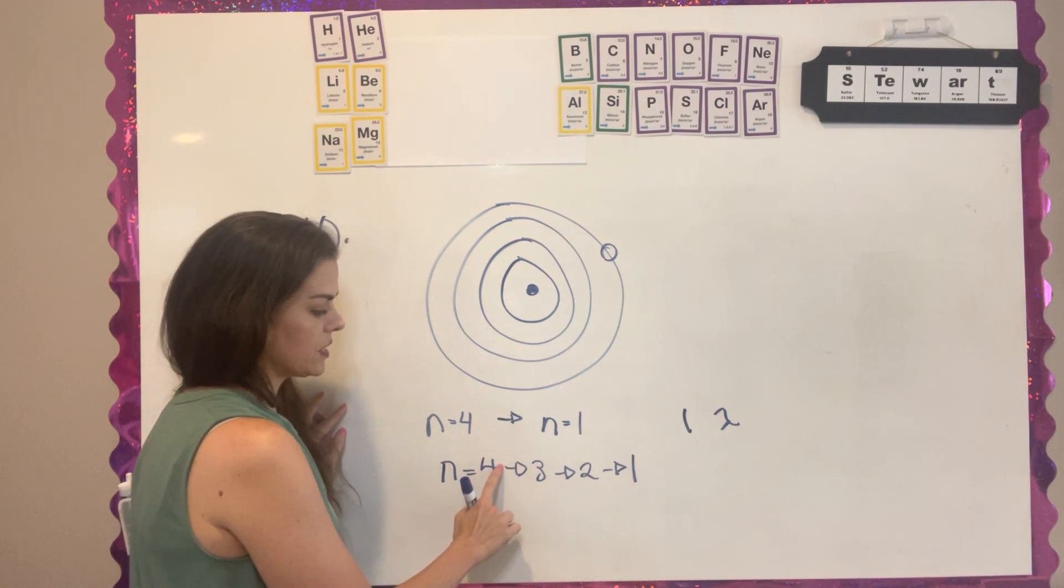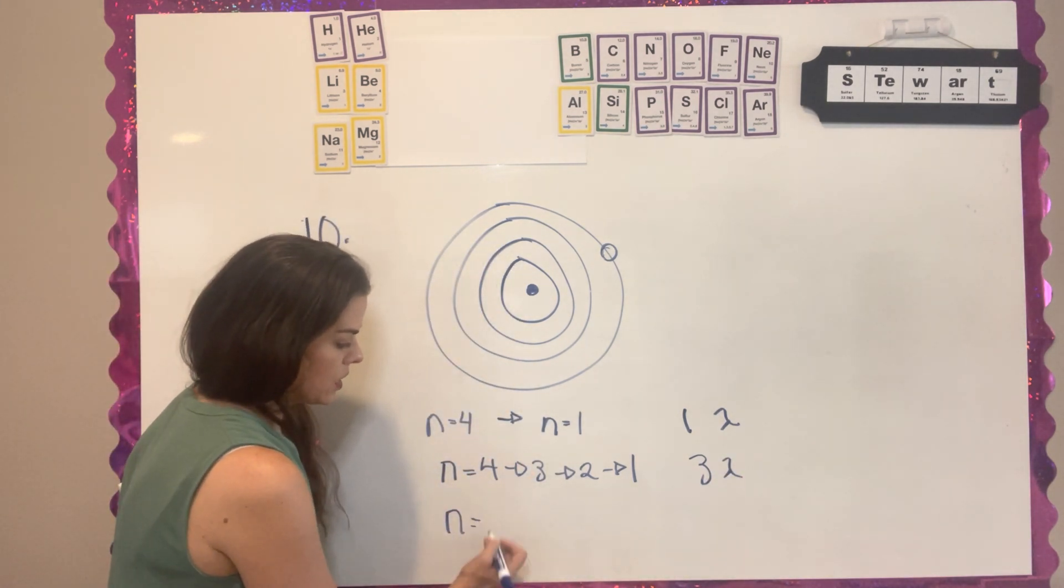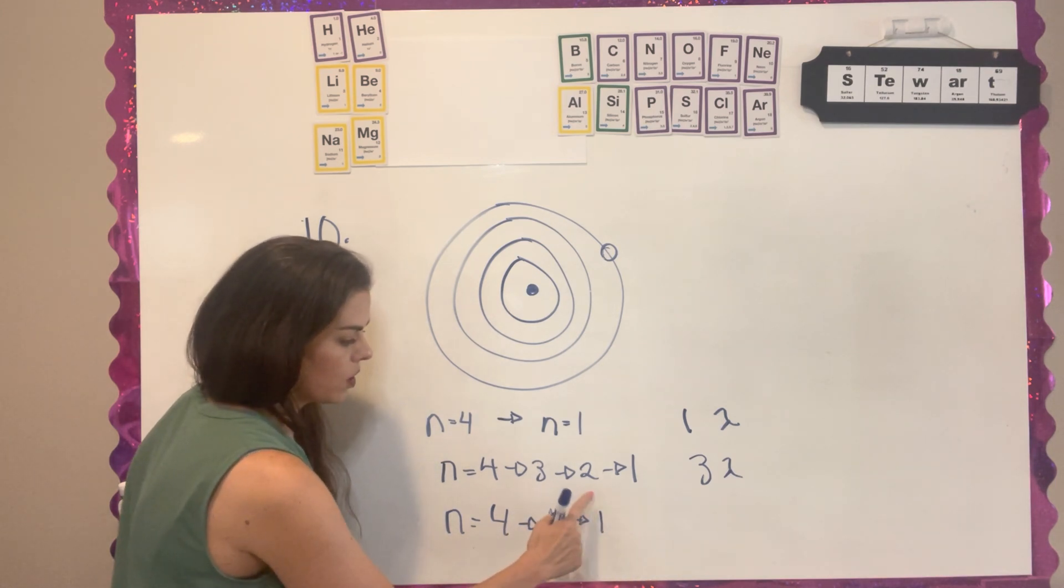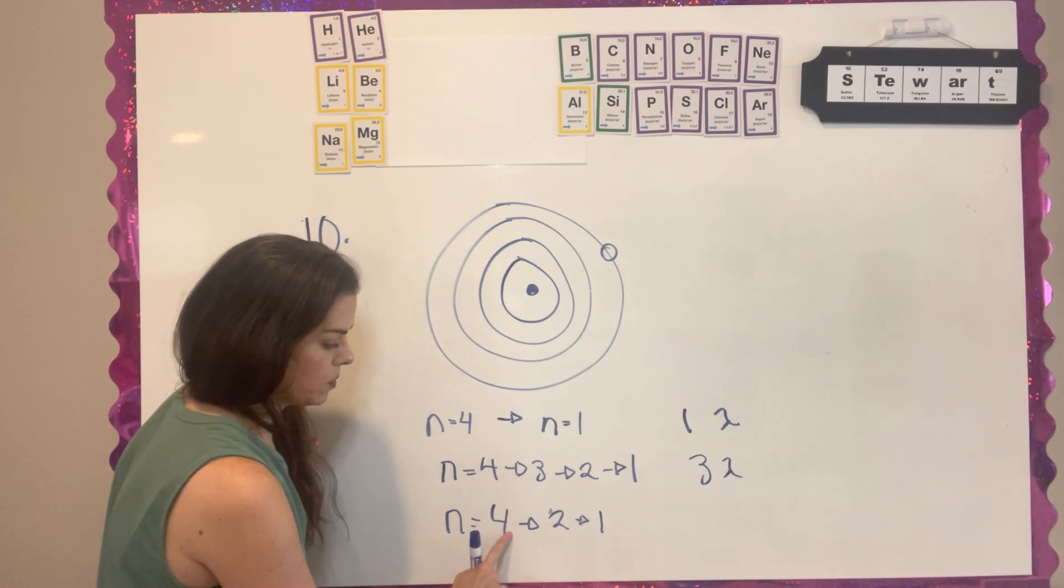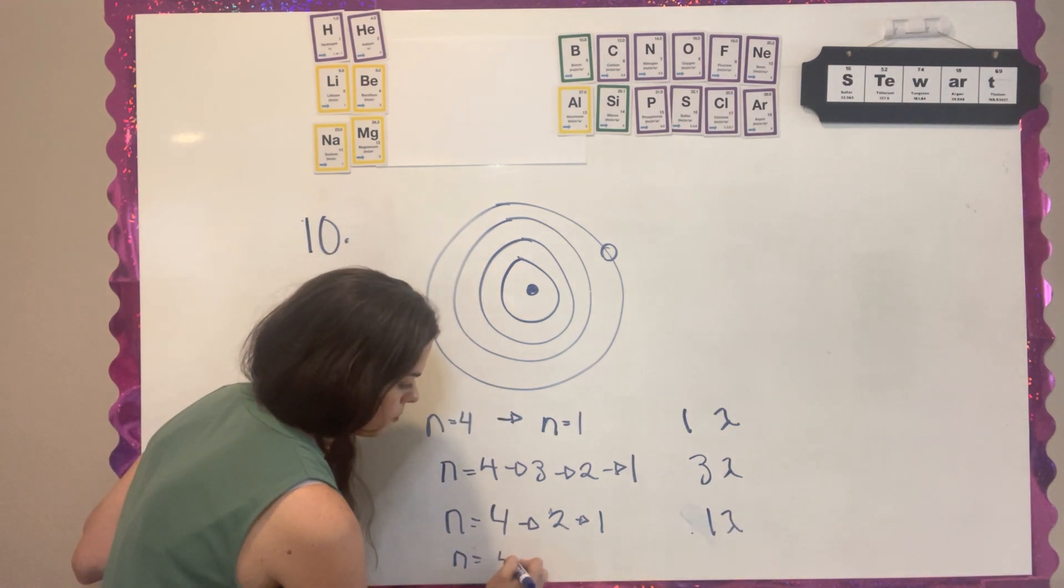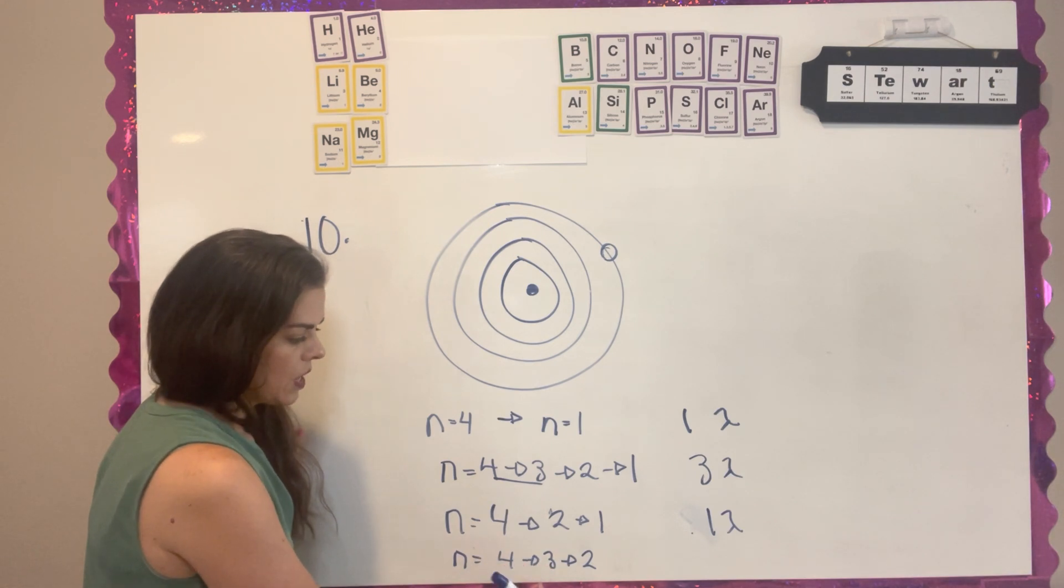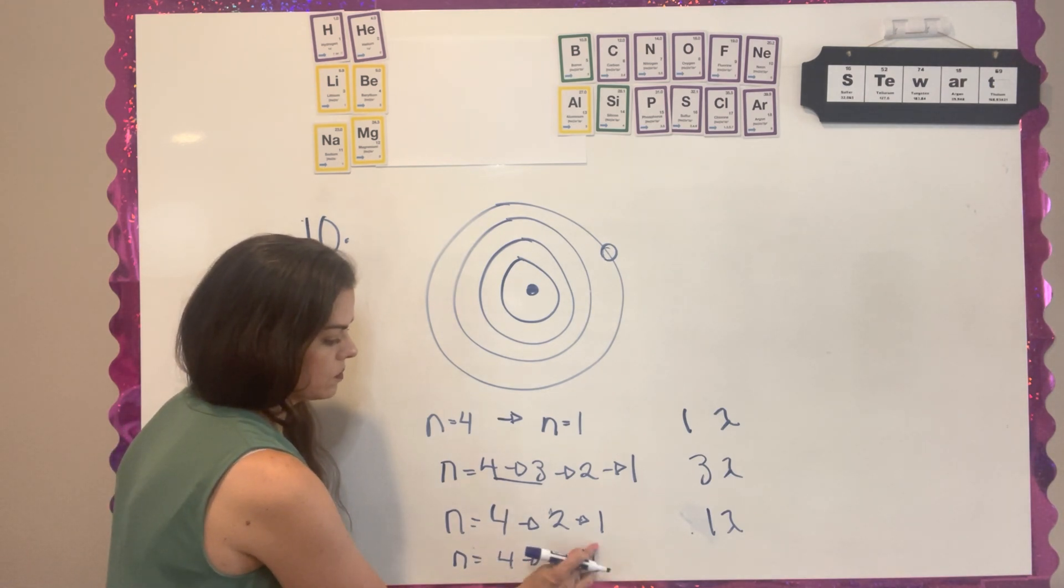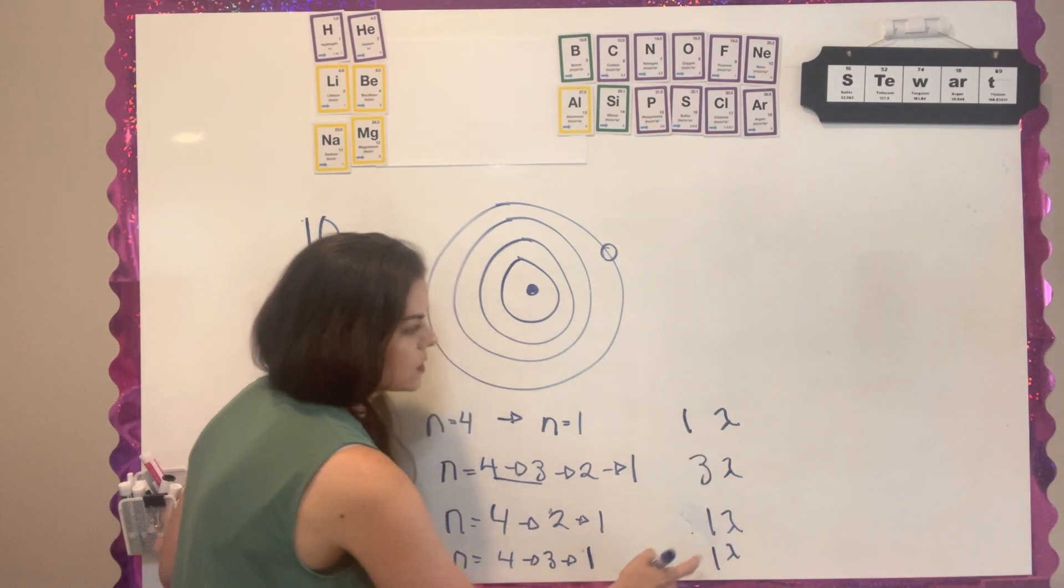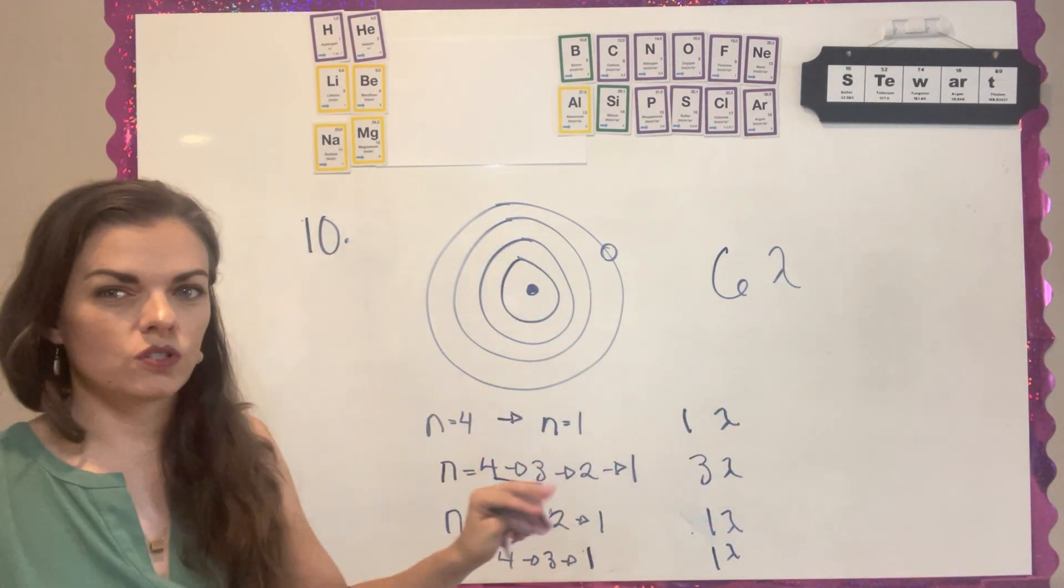Another process it could take is it could go from 4, and it can skip 3, and it can go to 2, and then it could go to 1. Well, we've already counted for 2 to 1, but we haven't accounted for it jumping from 4 to 2. So that would be another wavelength here. The other option is it could go from 4 to 3, skip 2, and go to 1. I've already accounted for 4 to 3, but I haven't accounted for 3 straight to 1, so that would be another wavelength - 3, 4, 5, 6. So there's a total of 6 wavelengths that it can produce as it's releasing. This is kind of an odd question, so if it's confusing, don't stress about it too much.